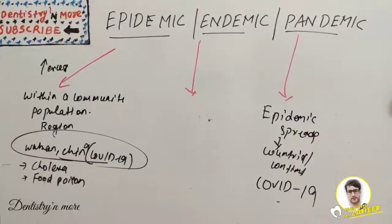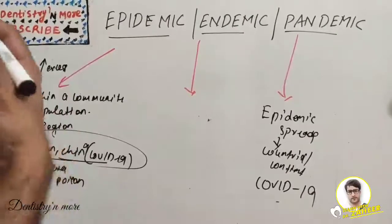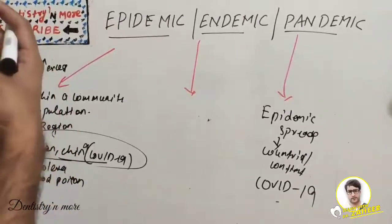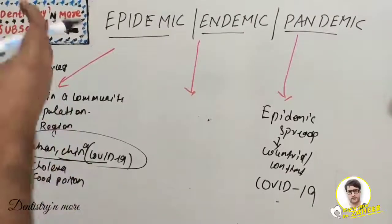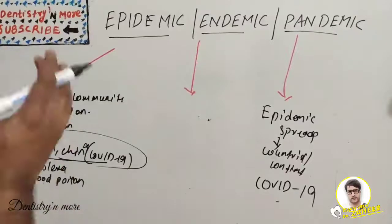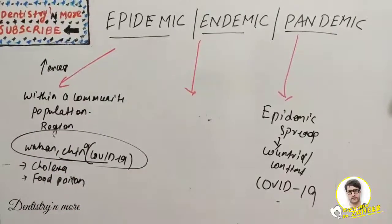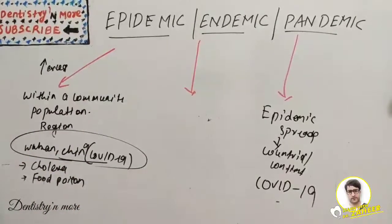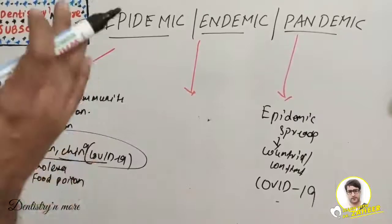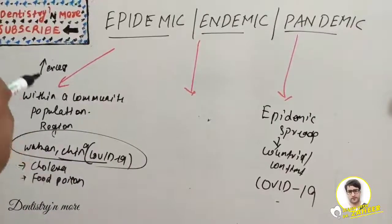So what is endemic? Endemic is a disease which belongs to a particular people or country — that is, the constant presence of a disease in a particular region. For example, malaria is endemic in many parts of Africa, meaning there is a persistent presence of malaria in Africa.